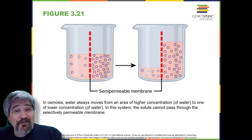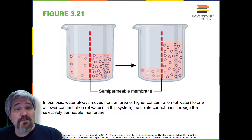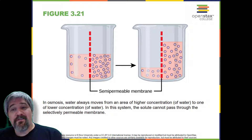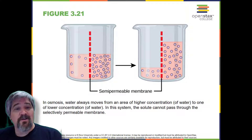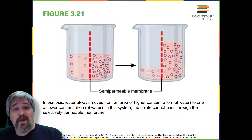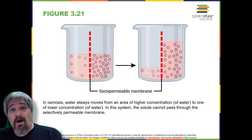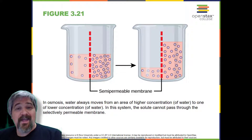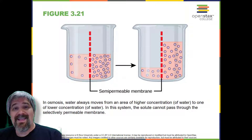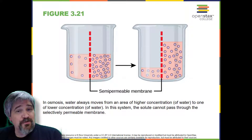Osmosis is the diffusion of water through a semipermeable membrane according to the concentration gradient of water across the membrane. Whereas diffusion transports material across membranes and within cells, osmosis transports only water across a membrane and the membrane limits the diffusion of solutes in the water. Osmosis is a special case of diffusion.